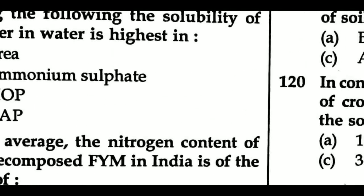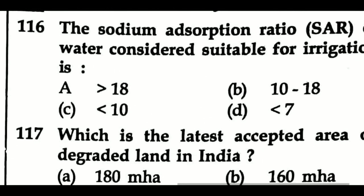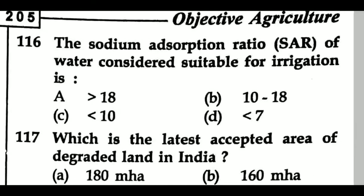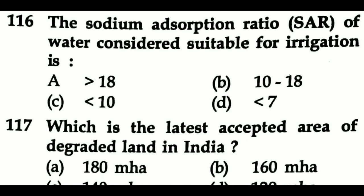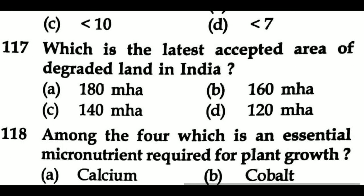Question 116: The sodium adsorption ratio (SAR) of water considered suitable for irrigation is — Option A: greater than 18, Option B: 10 to 18, Option C: 10, Option D: less than 7. Question 117: Which is the latest acceptable area of degraded land in India? Option A: 180 million hectare, Option B: 160 million hectare, Option C: 140 million hectare, Option D: 120 million hectare.